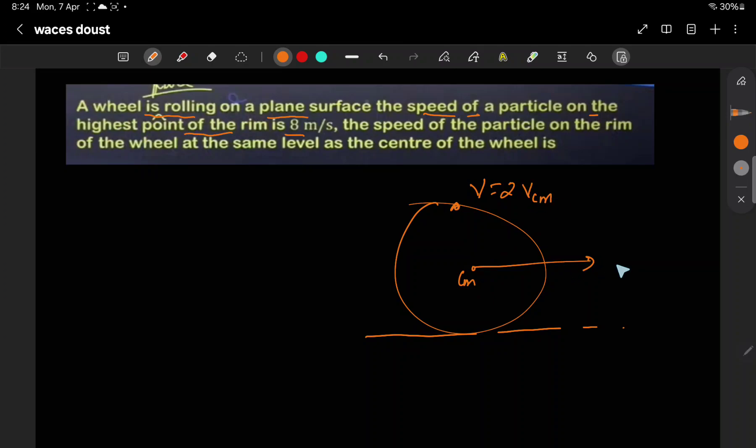Center of mass is linear motion. This is rotation motion. Now, at this point, they are asking what is the velocity at the same level as the center of mass. What is the velocity here?